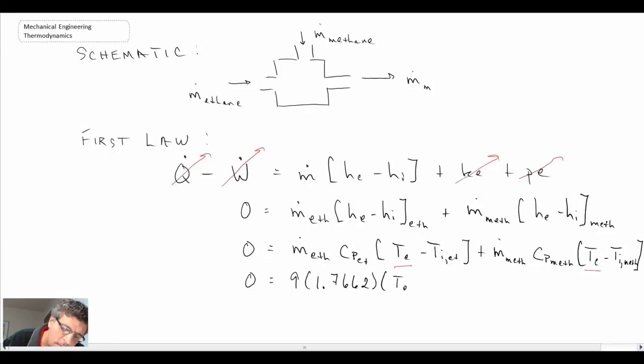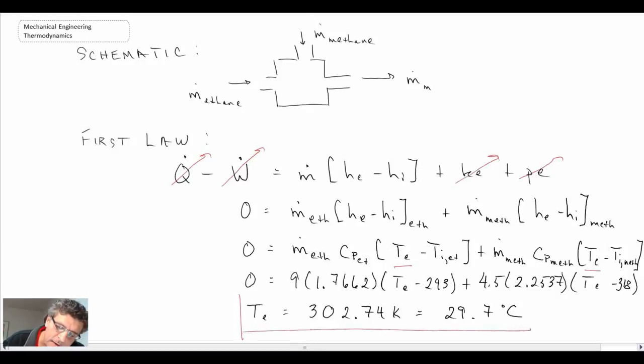So that is what we determined to be the exit temperature, which addresses the first part of the question. And so you can see one of our fluid streams was coming in at 20 degrees and the other was at 45, and so we come out at around 30 degrees C, which is pretty much in the middle there.